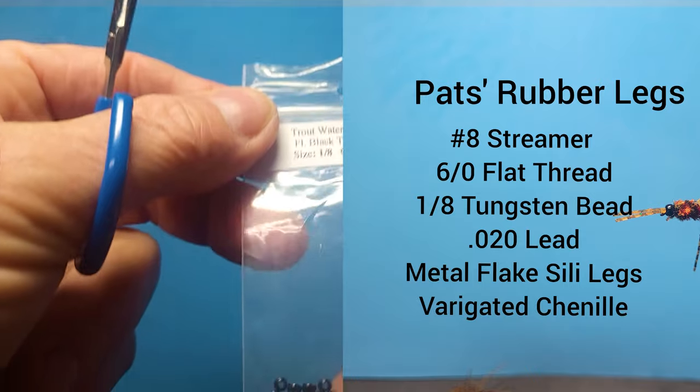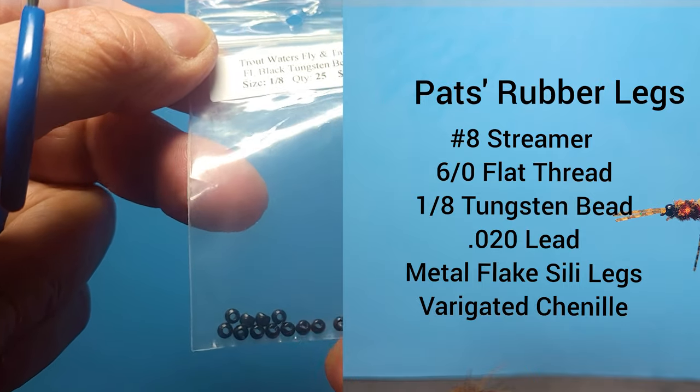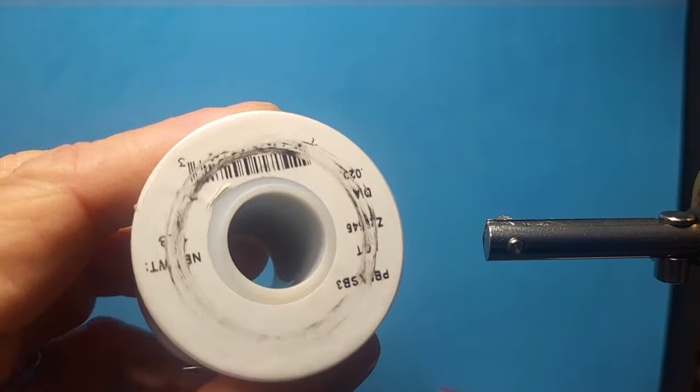We're going to need some weight, so we're going to need some one-eighth beads here, these are tungsten beads I got out of Tokenz, very nice beads. Also on the body we'll be using some 0.020 lead.